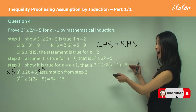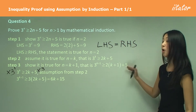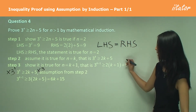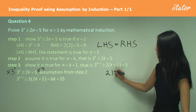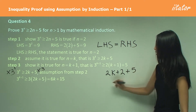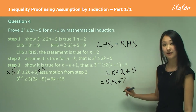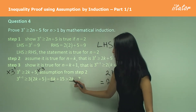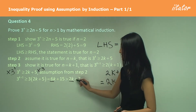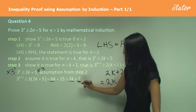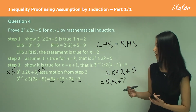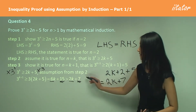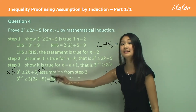Now going back to the inequality in Step 3, let's work on the right hand side. Expanding 2(k+1) plus 5 gives 2k plus 2 plus 5, which equals 2k plus 7. Comparing: 2k is definitely less than 6k, and 7 is definitely less than 15, so 2k plus 7 is definitely less than 6k plus 15.